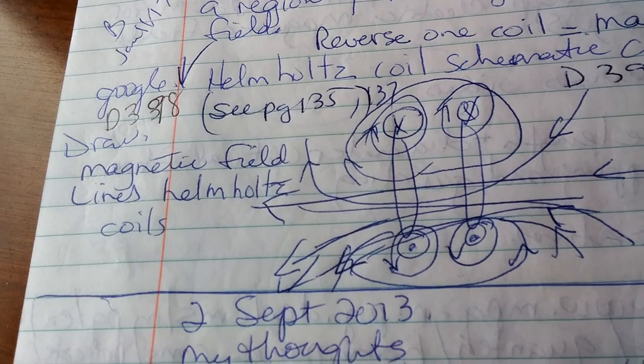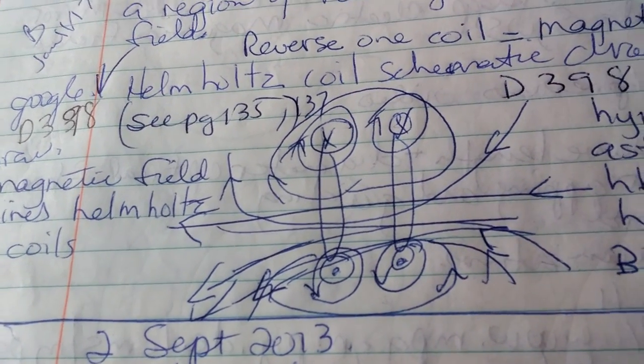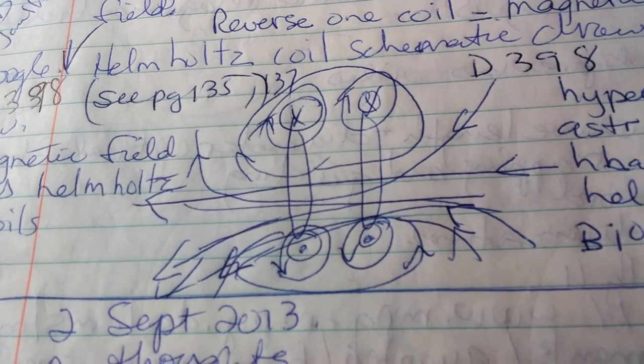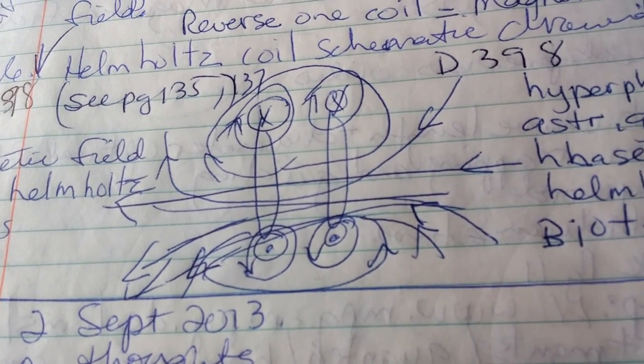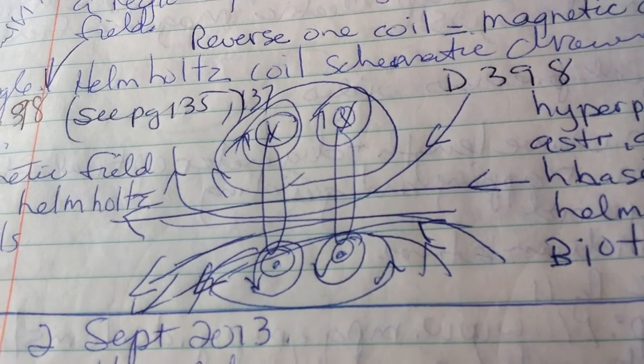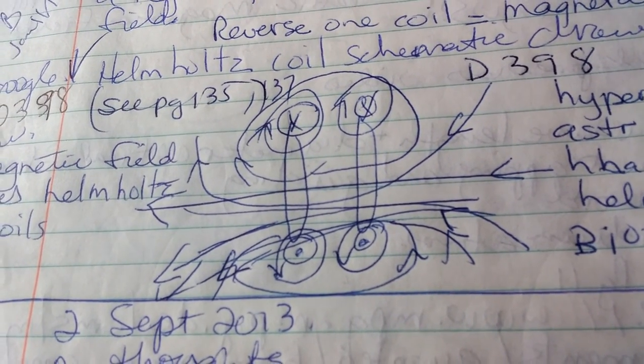The magnetic field lines of the Helmholtz coils — this is the directions that they go in. And it reverses. See the X's and the O's in the middle? They reverse.